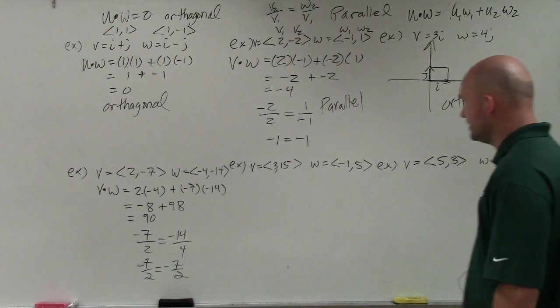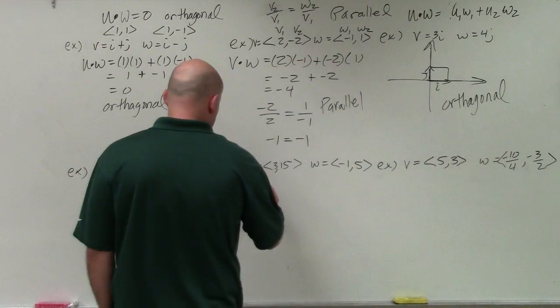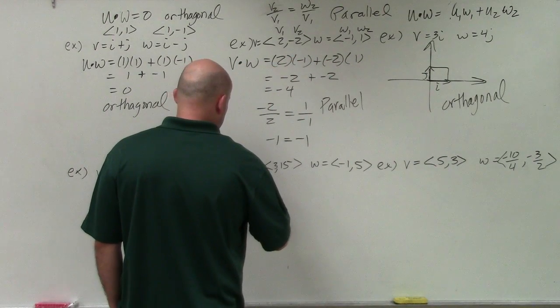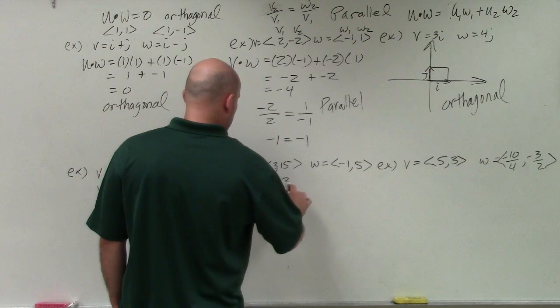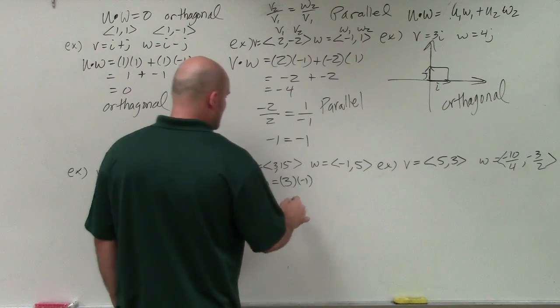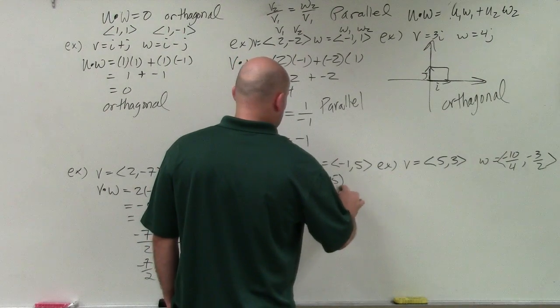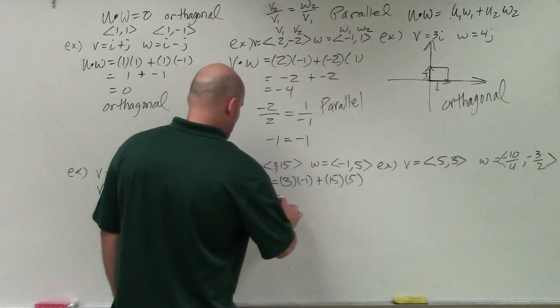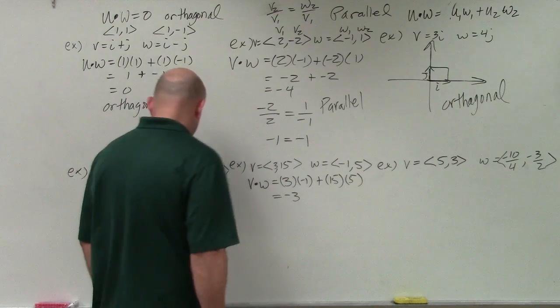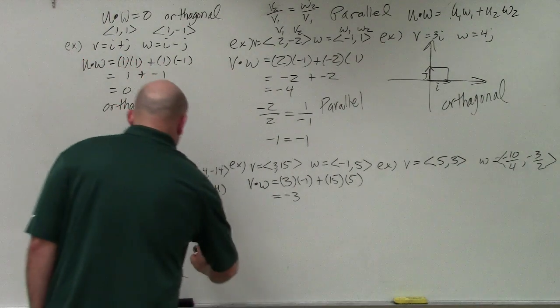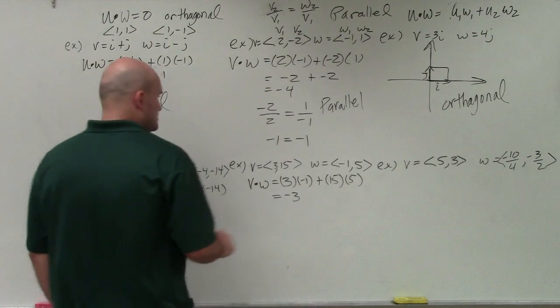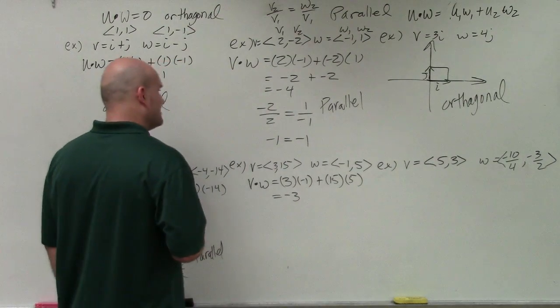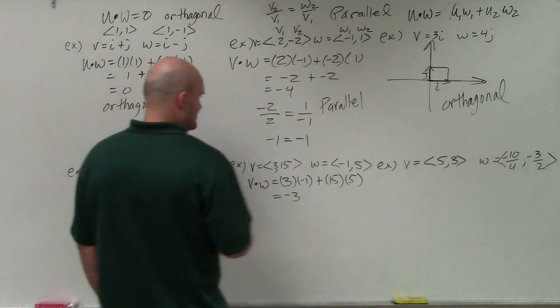In the next example, I have 3 comma 15 and w negative 1 comma 5. So if I do the dot product, v dot w, which is going to be 3 times negative 1 plus 15 times 5. Again, I know this is not going to add to 0. So they're not going to be orthogonal.